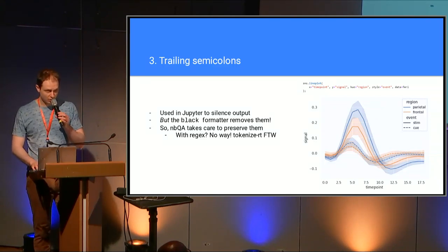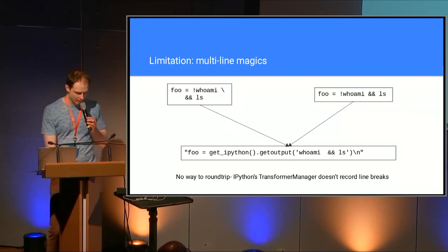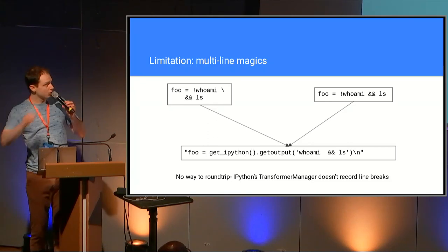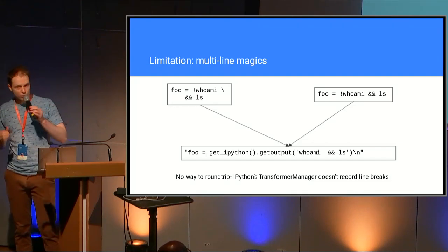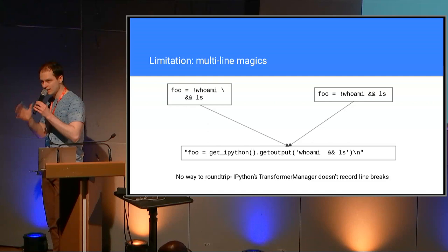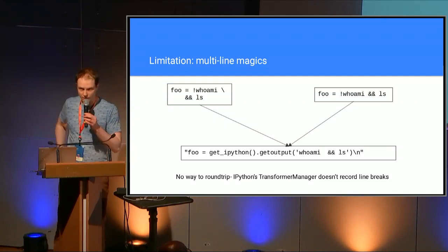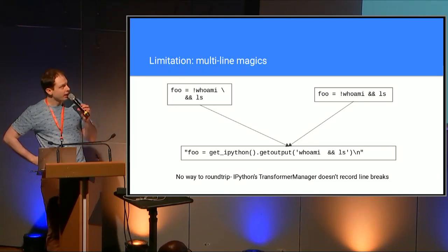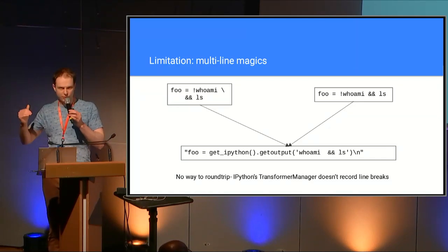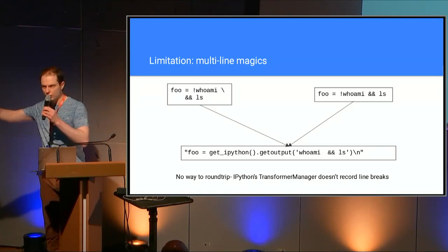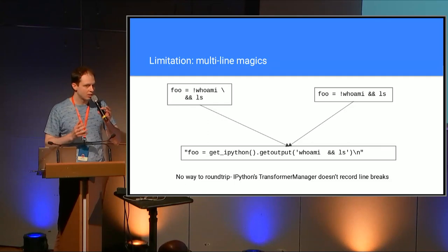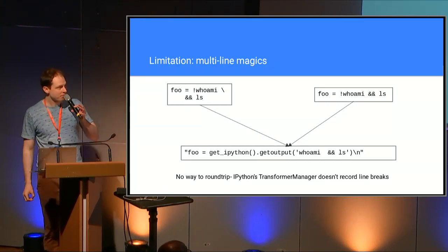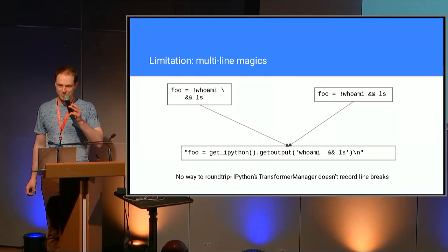Because this is JupyterCon, we also need to go deeper. Let's talk about a known limitation. Suppose you have a cell which contains multi-line magic, like the one shown there in the top left. If you wrote that cell on a single line, both would get transformed by IPython's transformer manager to exactly the same thing. I can't tell what you originally wrote if all I see is that resulting string — there's no way to round-trip here. If you took care to write a really long bash command split over 50 lines, you might be disappointed if NBQA returned it all on a single line. The solution is to skip those cells, but if anyone would like to come up to me in the corridor and suggest a solution, I would be very happy to hear it.